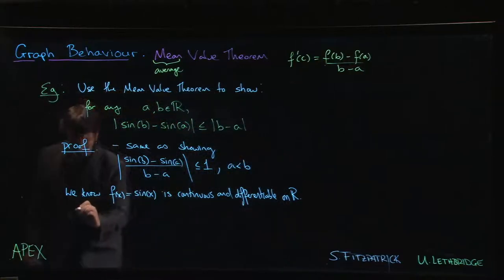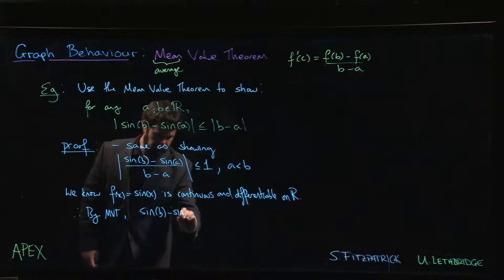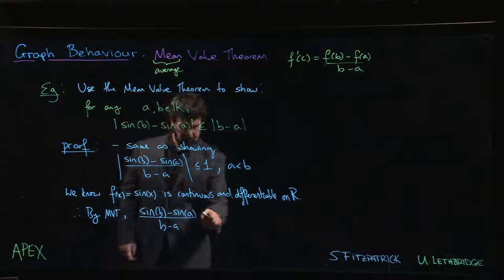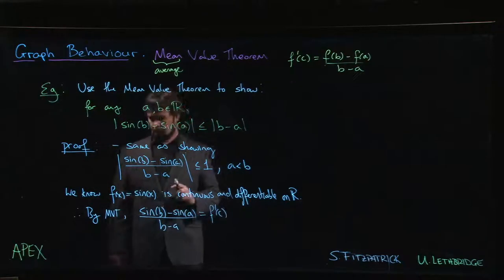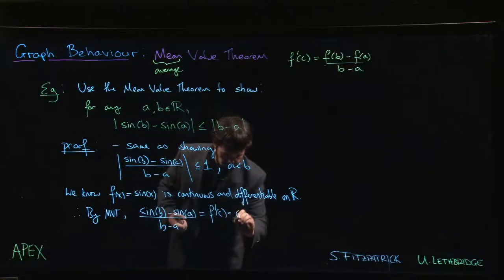Therefore, by the Mean Value Theorem we know that sin(b) minus sin(a) over b minus a is equal to f'(c). But what's f'? Well, the derivative of sine is cosine.